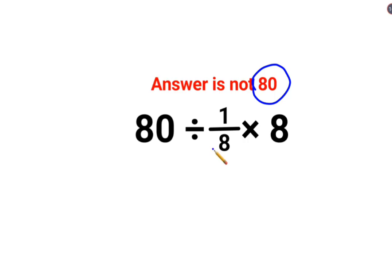And this is so easy, right? This 1 upon 8 multiplied by 8 is cancelled. So you are basically left with 80 divided by 1 which gets you 80.